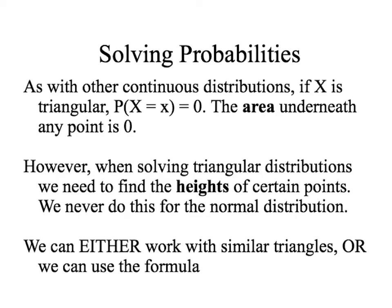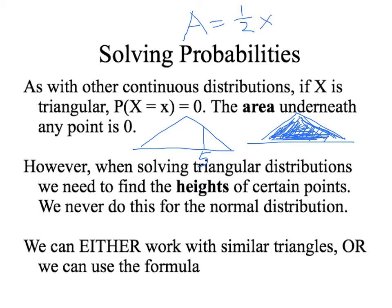So a triangular distribution is a continuous distribution, and we're going to work with the fact that any continuous probability distribution has an area under the curve of 1, and also that the area at any point is 0. So if I have another triangular here, and I'm looking for the probability that X is equal to, say, 5, then that probability will be 0. That should be familiar from the normal distribution. The difference here is that when we're using a triangular distribution, the main thing that's going to help us solve the problem is the formula for the area of a triangle, which is area equals half times the base times the height. And that means that we do have to find the height of the triangle, and we haven't had to do that before.